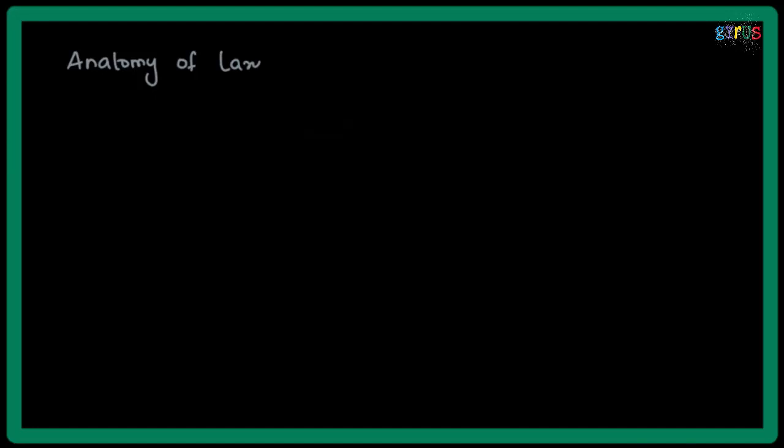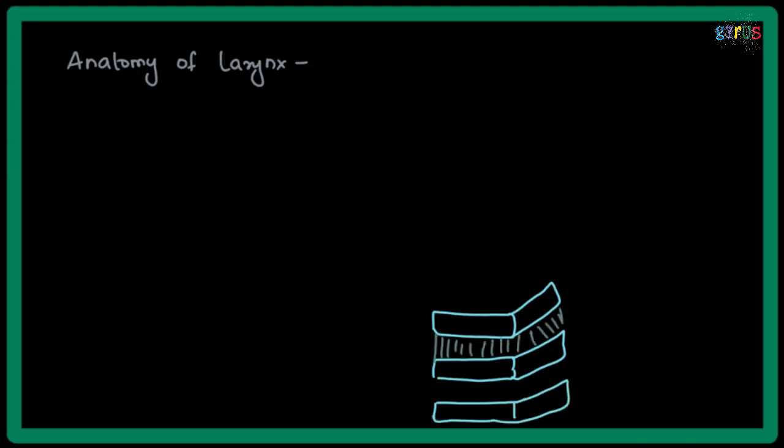In this video we will discuss the anatomy of the larynx. First, let us draw the trachea. These are the cartilages of trachea and this is a membrane in between these cartilages.